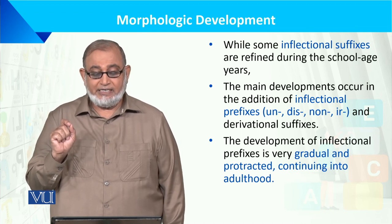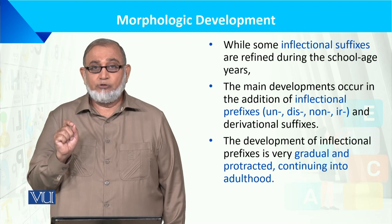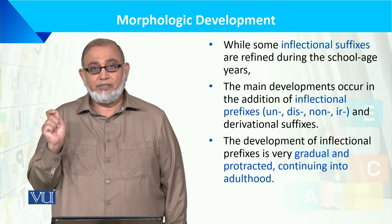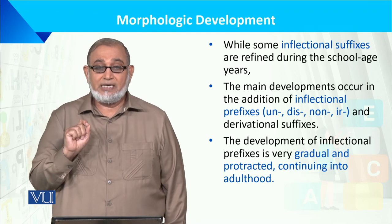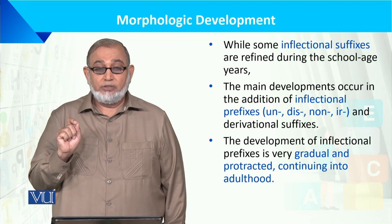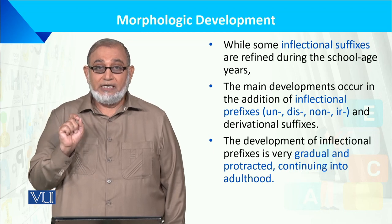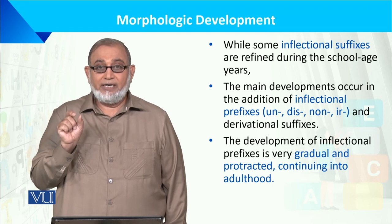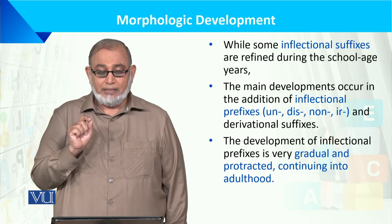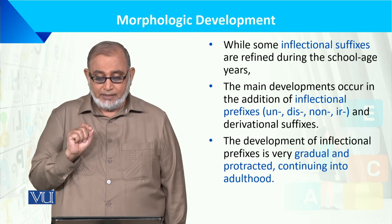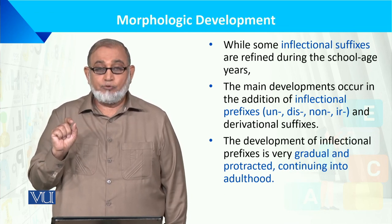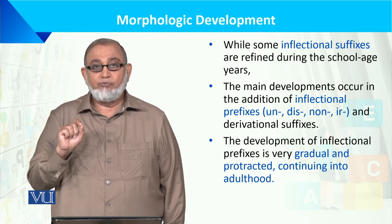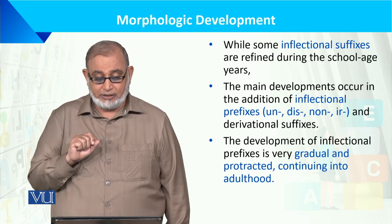جو inflectional suffixes ہیں، اس میں جو base words ہیں ان کے آغاز میں اور آخر میں الفاظ لگا کر وہ بنائے جاتے ہیں — یعنی سابقے اور لاحقے دونوں۔ جیسے 'uncomfortable' میں 'comfort' base word ہے، 'un' اور 'able' prefix اور suffix ہیں۔ بچے یہ ابتدائی سالوں میں نہیں سیکھتے بلکہ بعد والے سالوں میں سیکھتے ہیں۔